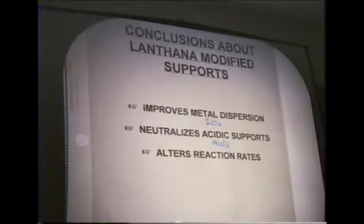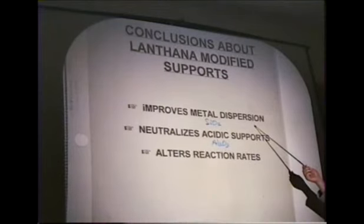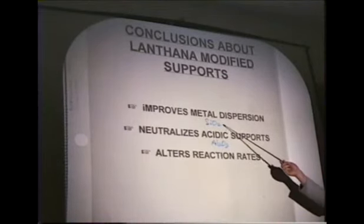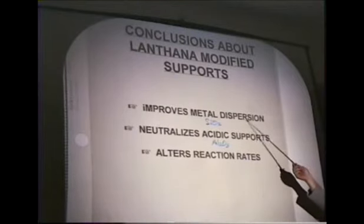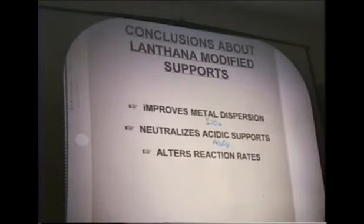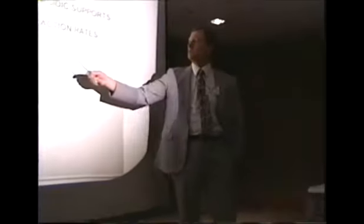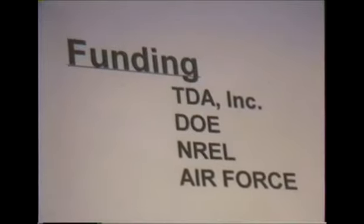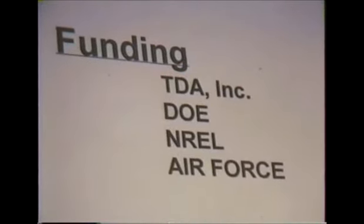We can conclude that modifying these supports with basic oxides improves, first, metal dispersion—particularly when using lanthanum or ceria, where there is a dramatic improvement. In the case of aluminum oxide supports, it neutralizes the acidity without a large effect on dispersion, since alumina is already a fairly good dispersant. And there is evidence that these modifiers are indeed altering the activity of the metal as well. I'd like to acknowledge our funding sources: TDA, Department of Energy, National Renewable Energy Lab, and the Air Force. Thank you for your attention.